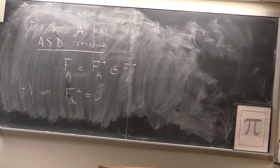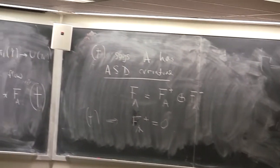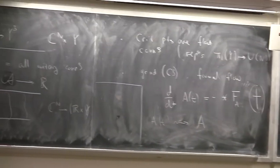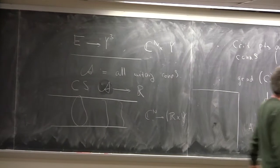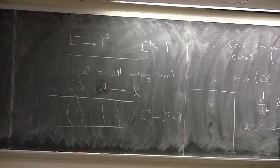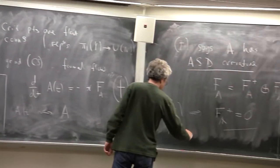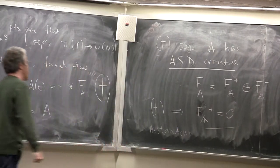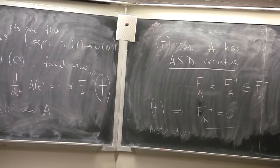Floer's construction of instanton homology rests on a key observation: if you have a one-parameter family of connections on the 3-manifold Y, you may look at it as defining a four-dimensional connection in a bundle over the cylinder R times Y. This equation — equation dagger — tells us that this connection A has anti-self-dual curvature. The curvature two-form in four dimensions splits into self-dual and anti-self-dual parts; anti-self-dual curvature is the condition that the self-dual part F+ is zero.